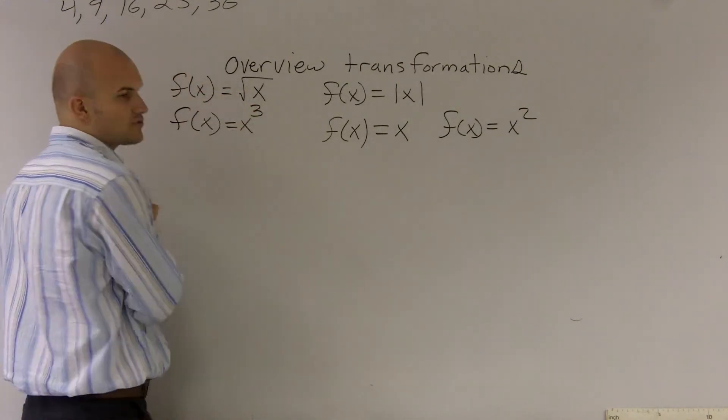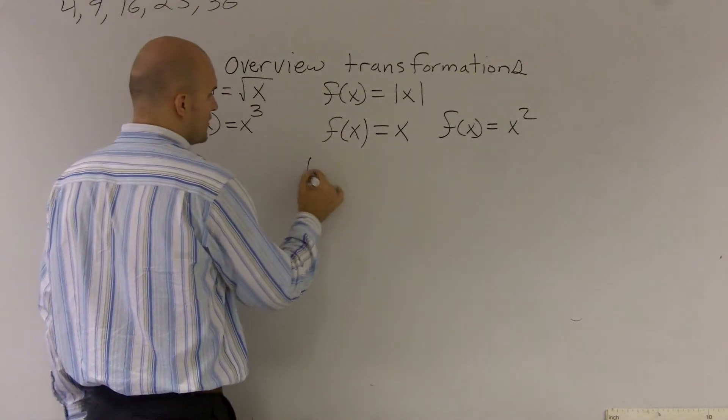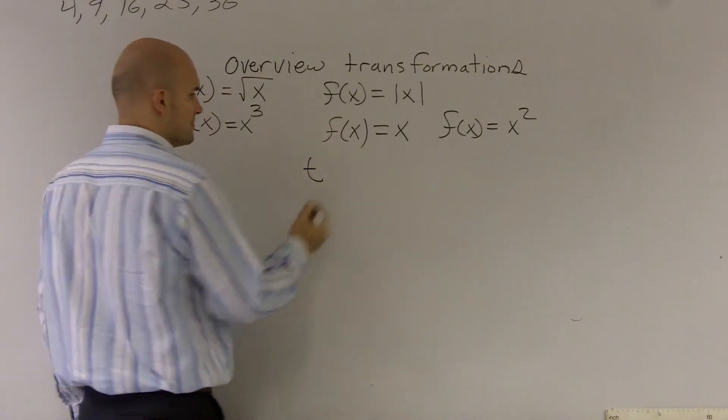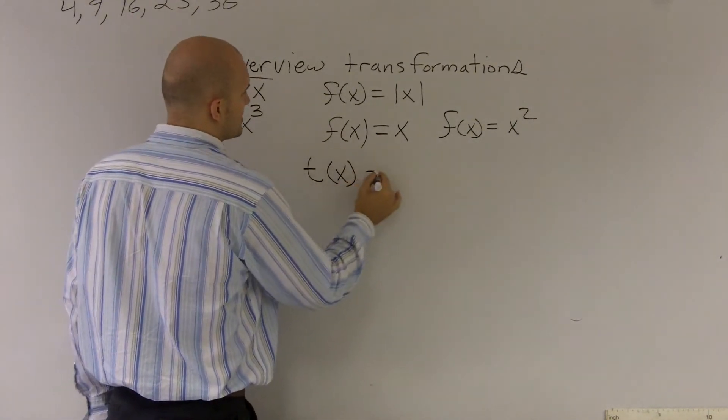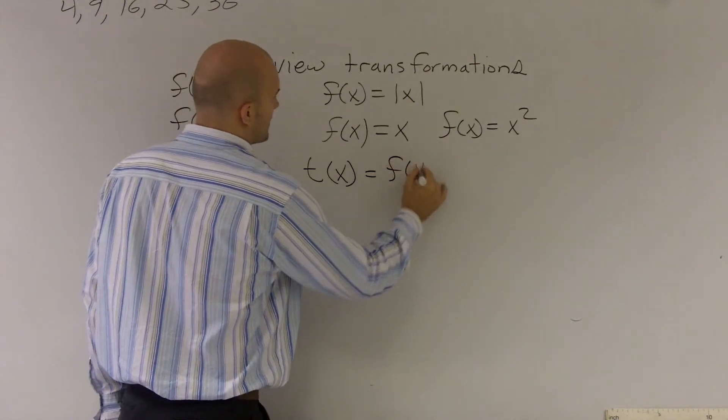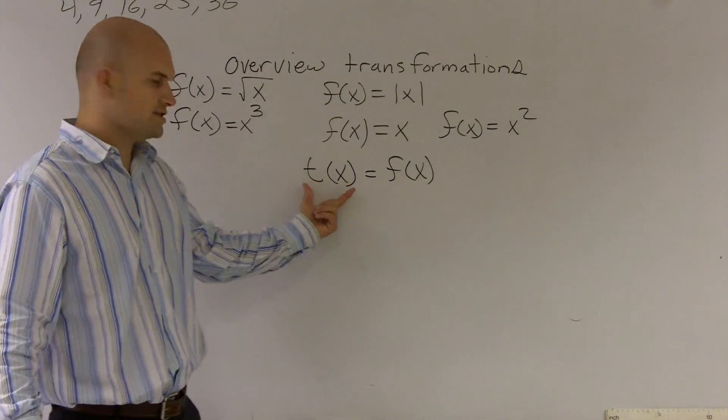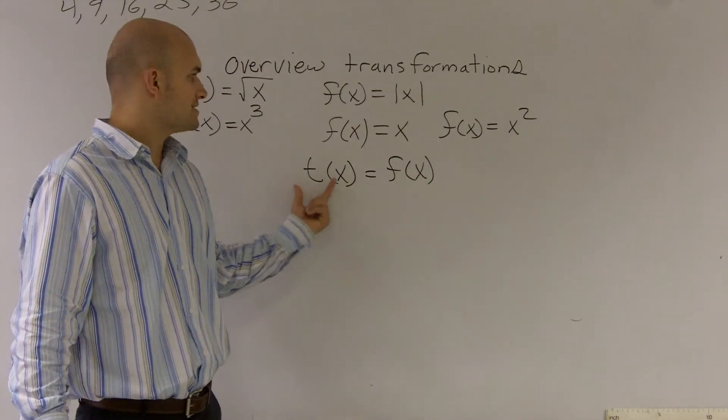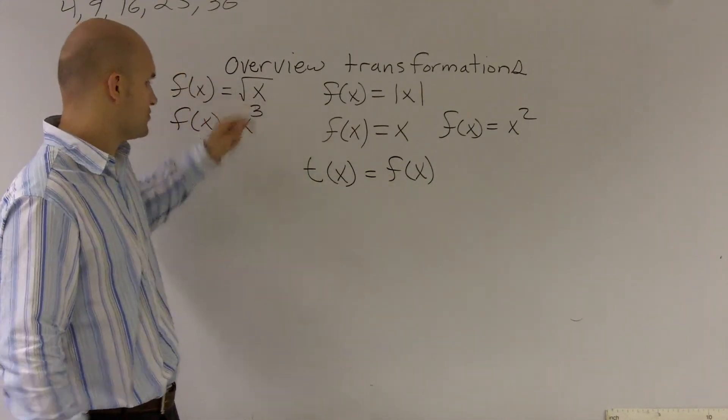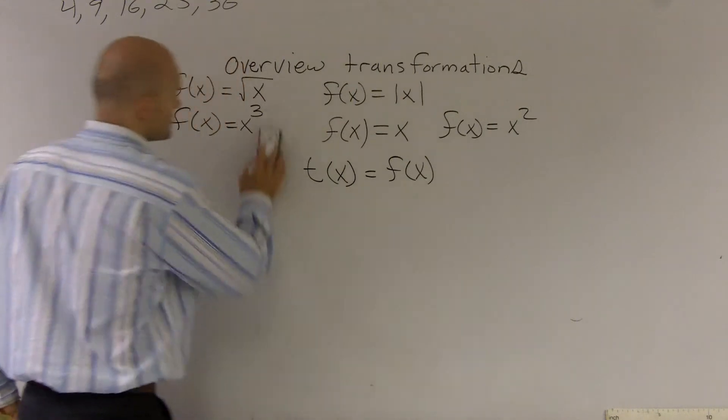The first thing we're going to talk about is, I'm going to start with f(x) = √x. So I'm going to give a new function which t stands for transformation: t(x) = f(x). So this is my transformed function that's going to equal my original function.